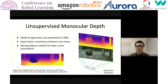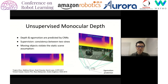Unsupervised Monocular Depth Learning from videos is a very popular research topic in recent years. The way it works is as follows: you take a pair of frames, and you use a CNN to predict the depth map and the ego motion between the two frames. The supervision comes from the consistency between the two views. In many of the earlier works, it assumes that the scenes are static, so basically the two views differ by a rigid motion.